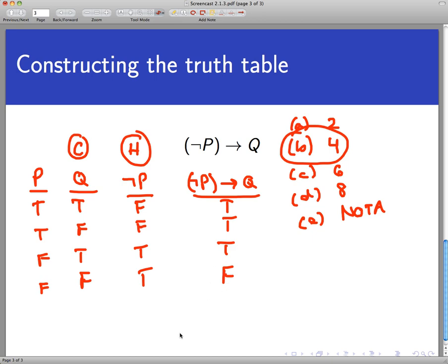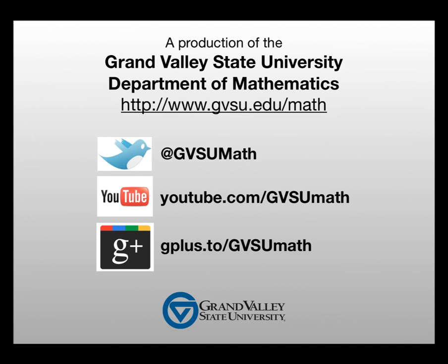So there's another truth table with a little bit more complexity to it, an implication that has a negation on it. Still the same process though. Thanks for watching, and wait for the next video. We'll be right back.